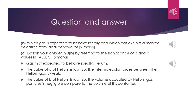For question B: which gas is expected to behave ideally, and which gas exhibits a marked deviation from ideal behaviour? Question C asks us to explain by referring to the significance of A and B values in Table 3. To answer this, we should know that for an ideal gas, molecules are able to overcome intermolecular attractive forces, and the volume occupied by gas molecules is negligible. So we go back to the table and look at A and B.